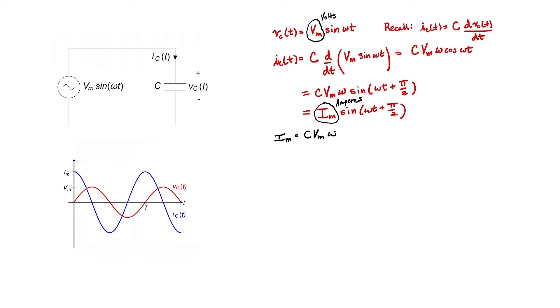Looking back at my definition for the peak current I sub m, we know that this is in amperes. Capacitance C is in farads, V sub m is in volts, and omega is in radians per second, and it's true that this relationship must hold. We also know that current equals voltage divided by resistance. Therefore, farads times radians per second should give us units of inverse ohms.